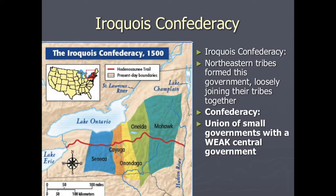Before we had the Constitution, the United States created what was known as the Articles of Confederation — our first constitution — and it fell flat on its face because it created too weak of a government.